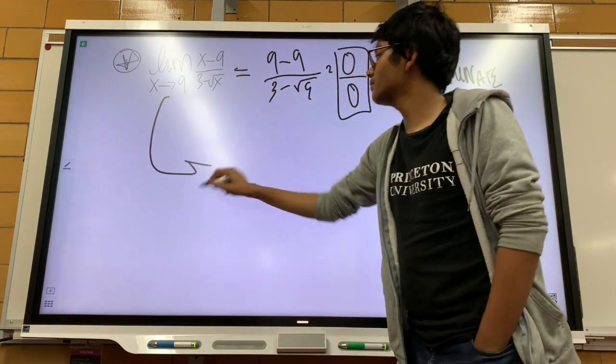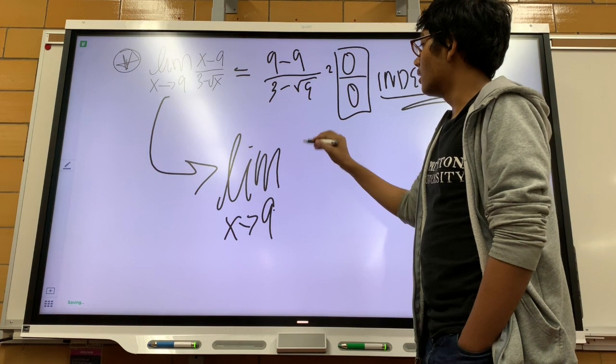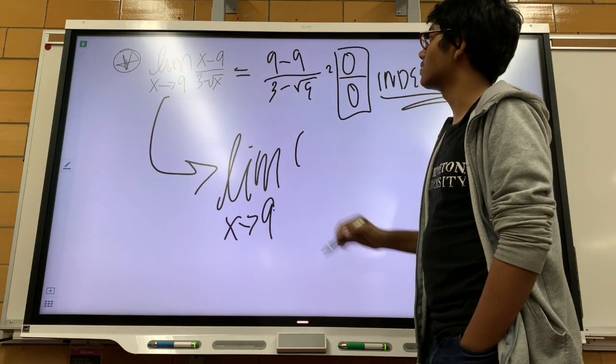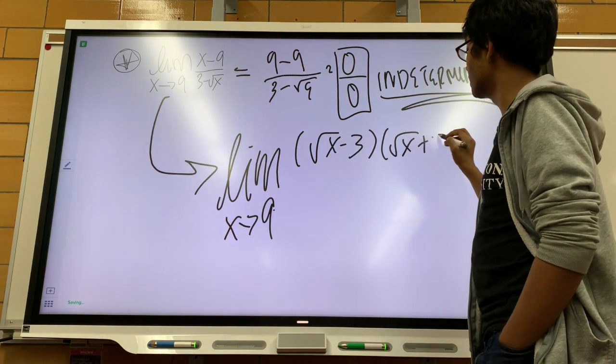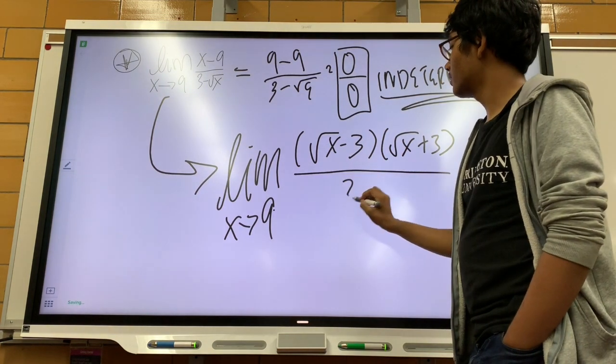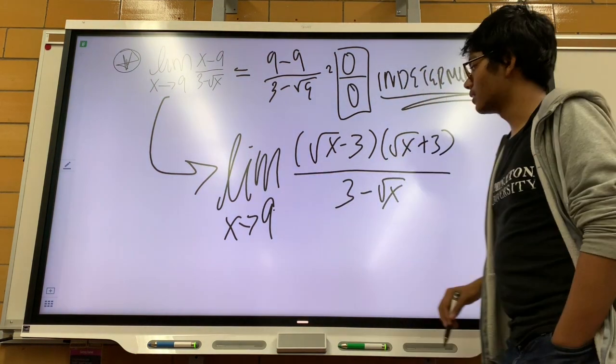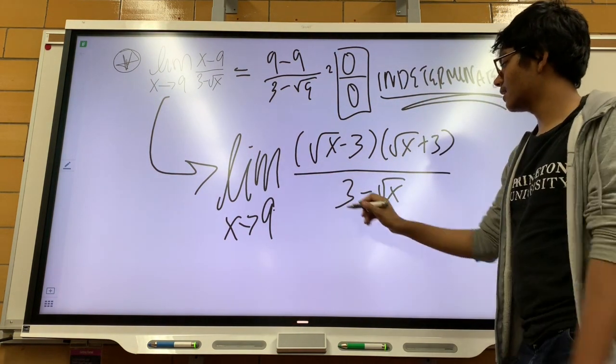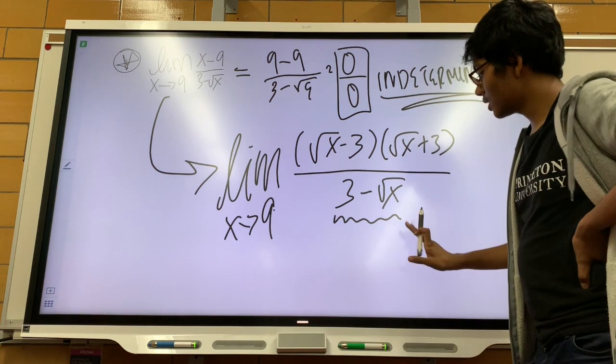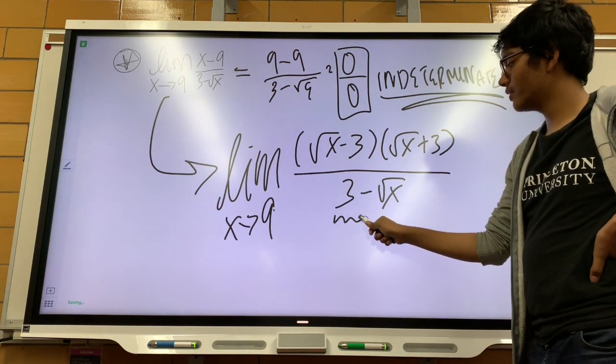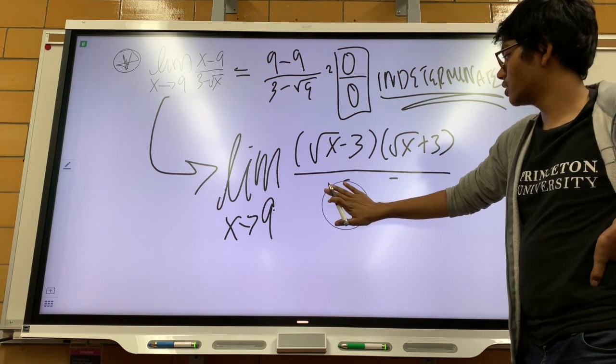So let's see what happens. So the limit as x approaches 9 of, well, it's the square root of x minus 3 times the square root of x plus 3, all over 3 minus the square root of x. Now, there's a little problem here if you didn't already know this. You can see that 3 minus the square root of x is not the same as the square root of x minus 3, right? So what can we do? There's a little trick you can use. It's just we can multiply this by negative 1. So let me show you what I mean.